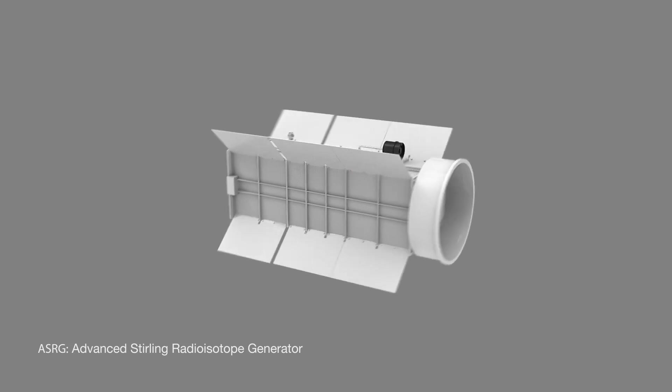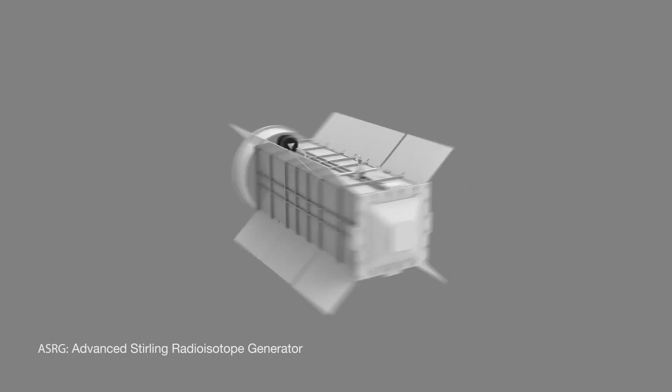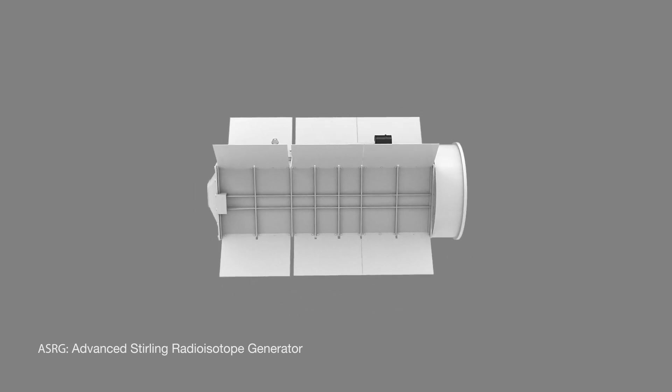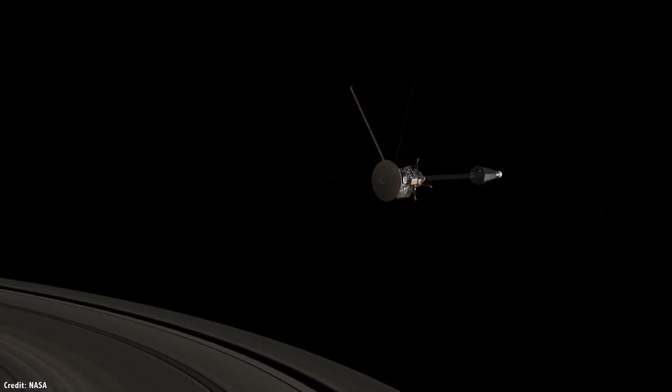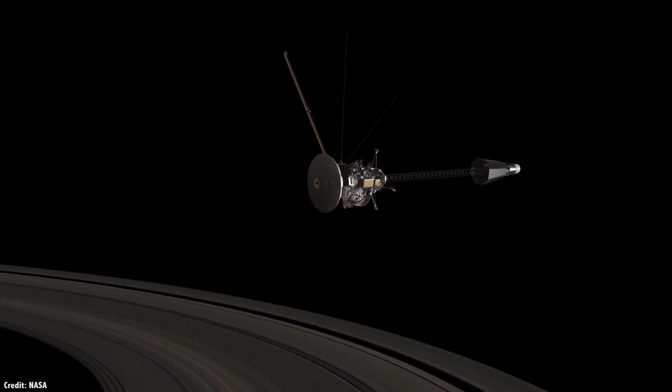So NASA specialists have grounds for their claims that radioisotope sterling generators, or as they are also called dynamic radioisotope systems, have a service life of at least 15 years, which is more than enough to solve many tasks.